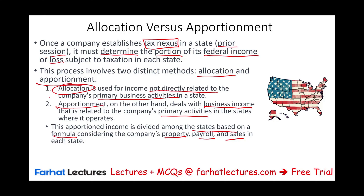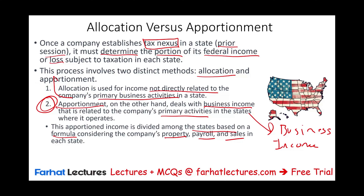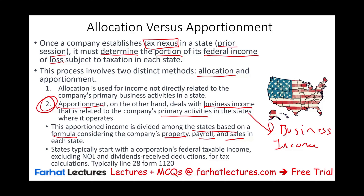Apportionment covers business operating income, not investment income. A company could have two types of income: business income from its operations, and investment income such as dividends, CDs, or bonds that generate interest — that investment income is allocated. When it comes to business income, we typically start with the corporation's federal income tax excluding net operating loss and dividend received deduction — typically line 28 of Form 1120.